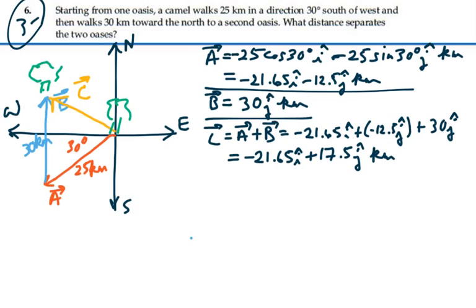And those are the two components for our resultant C vector. In other words, we're going negative 21.65 in the i direction, and then we're going to positive 17.5 in the j direction to comprise our C vector. Sounds good.